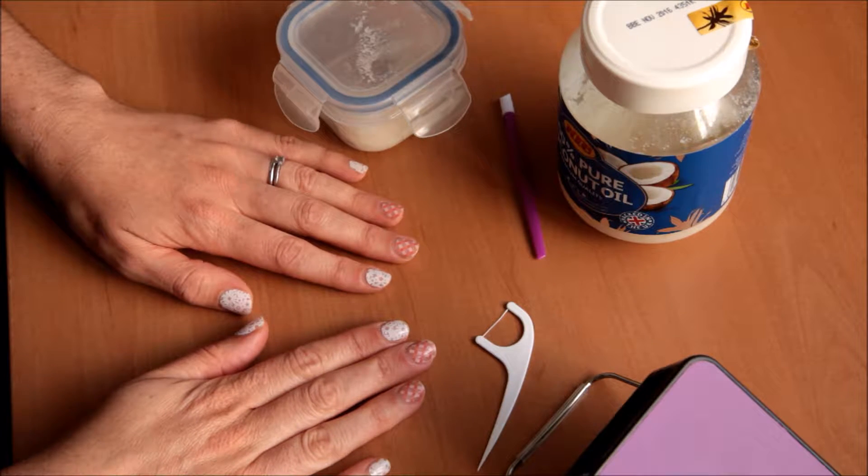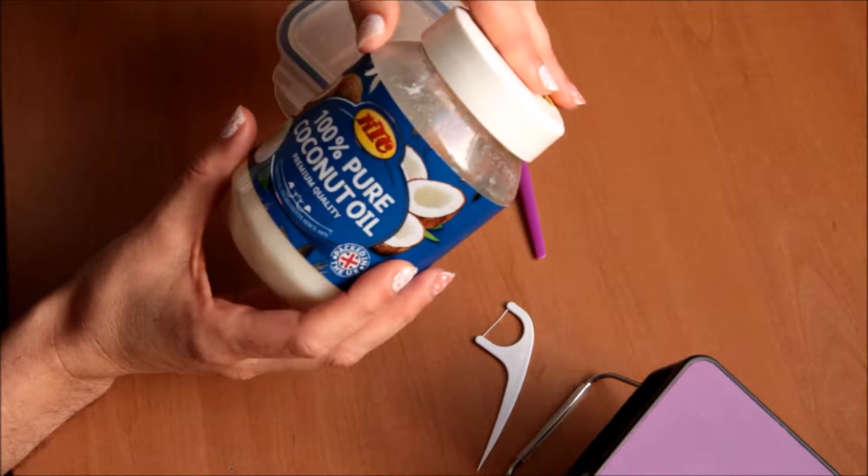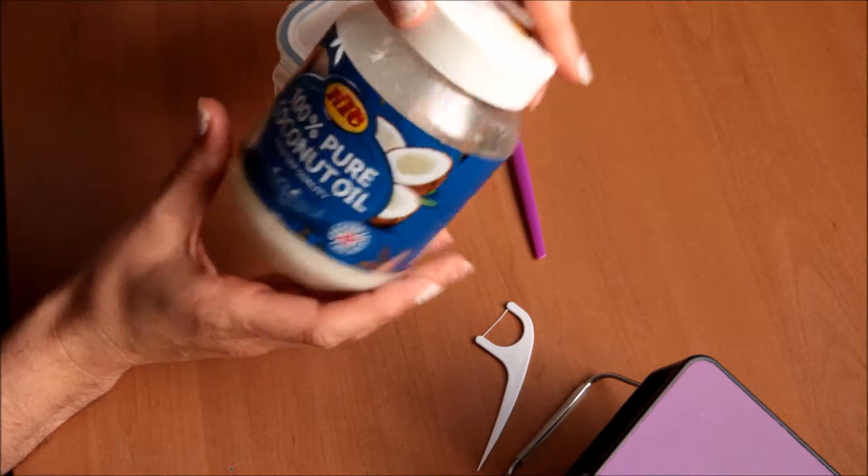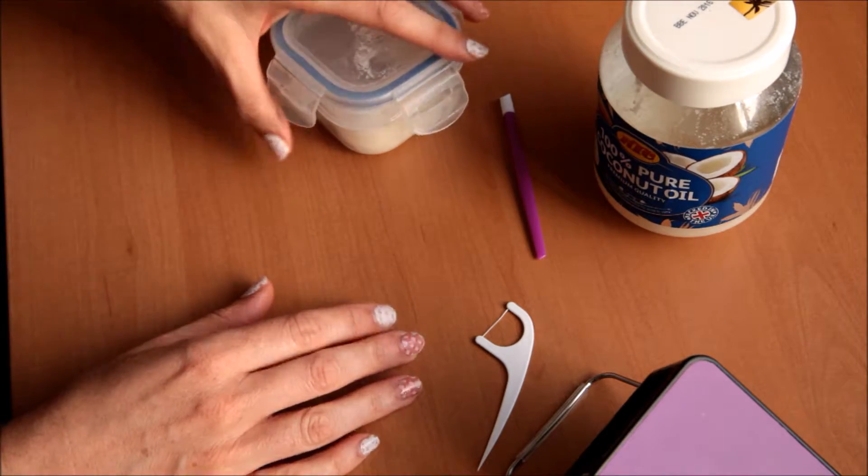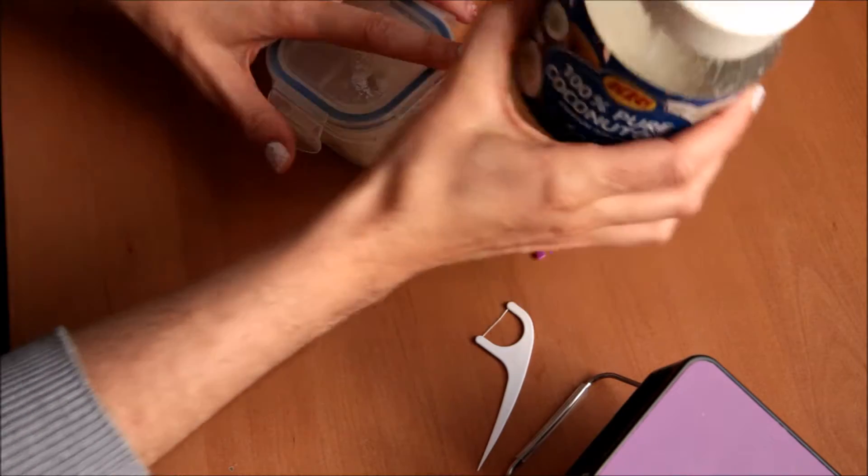So I'm going to show you two methods today. I have my coconut oil. This is just regular coconut oil from the supermarket and it's easily readily available nowadays. I have some in this tub so I can keep using this rather than keep taking it from the big tub.